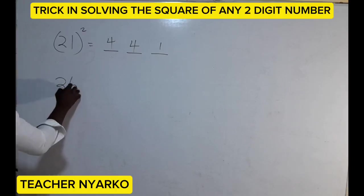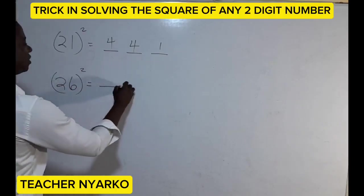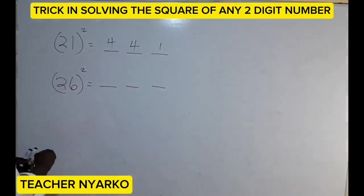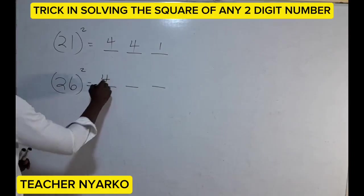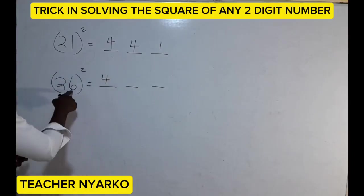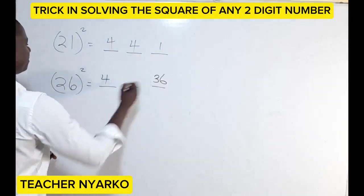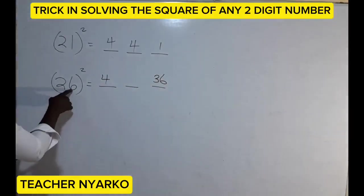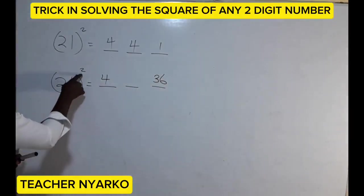Let's take another example: 26 squared. We are going to split it the same way. Two squared gives us four. Then six squared gives us 36, so 36 goes here. Then two times six gives us twelve, and twelve times two gives us twenty-four — so you have twenty-four here.